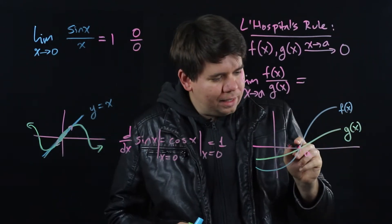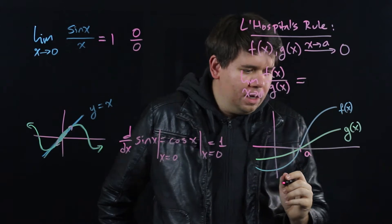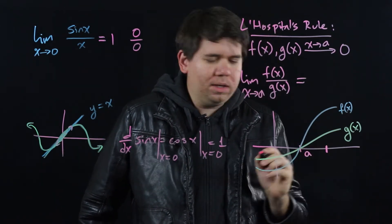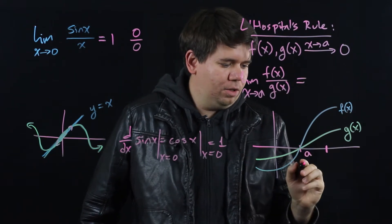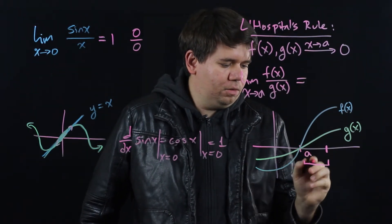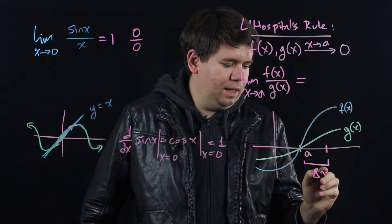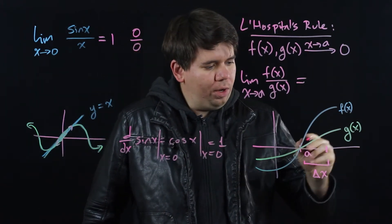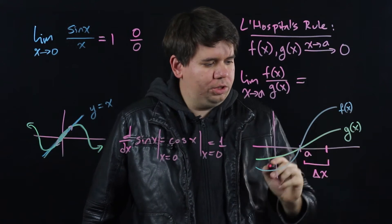Now we can't plug in a because we get 0 over 0, but you can think about some point really close to a, just a plus a little bit, just go a little bit to the right. So I'm just going to call that some little change in x there, some little delta x.